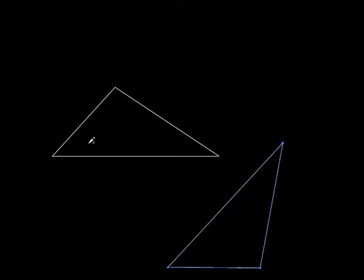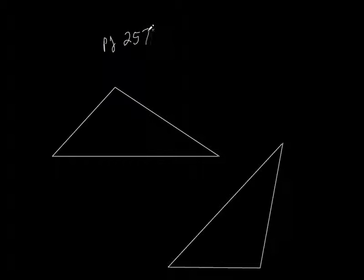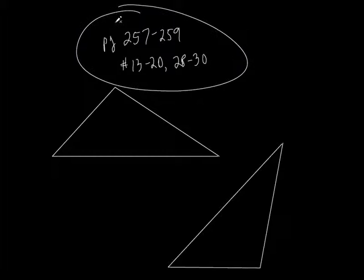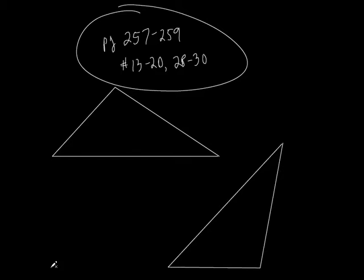Let's do this. We're on page 257 to 259, doing numbers 13 to 20 and 28 to 30. You should know how to do most of those. Towards the end, watch that other guy's video and look at the last example in the book.